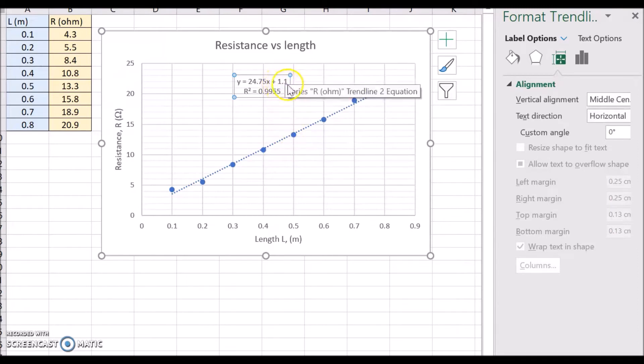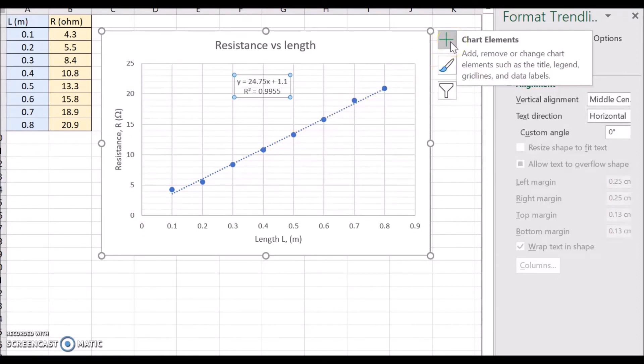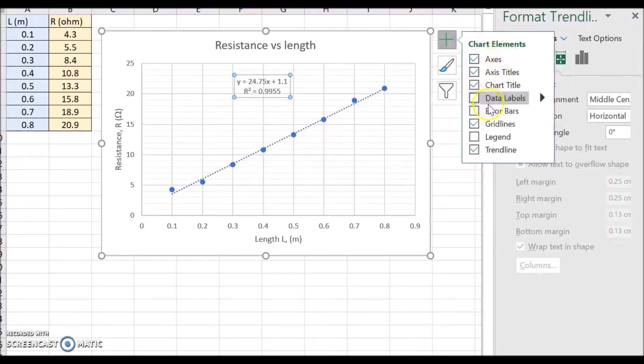That indicates there's some systematic error. You can see this line here is not going to go back through the origin. So let's have a look at where the line would go. Now just have a look at the trend line again.